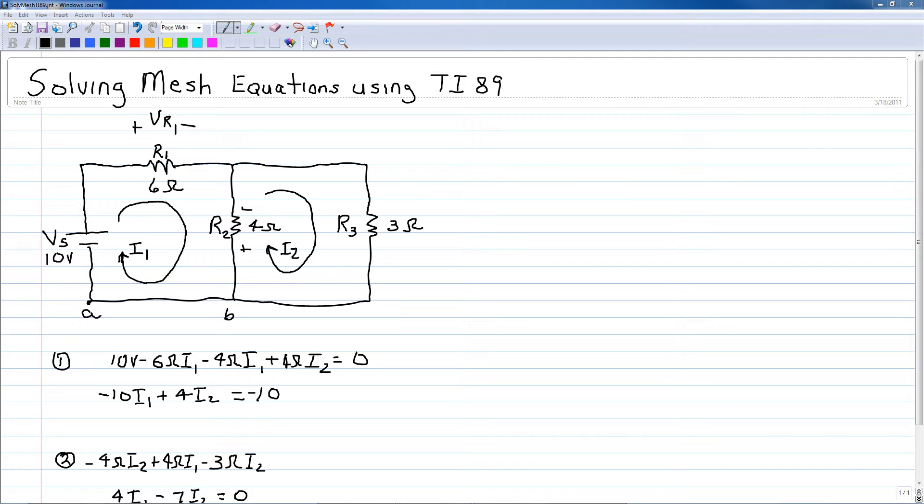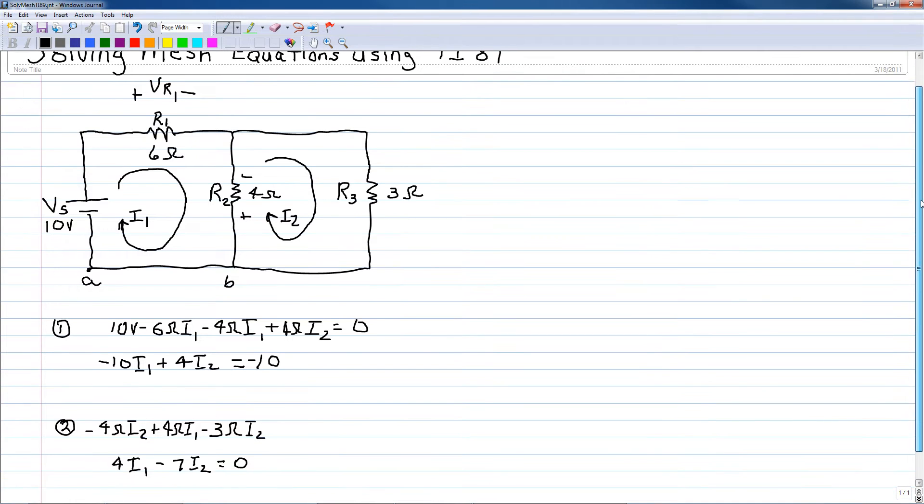Welcome to this video on solving mesh equations using the TI-89. In this example we have a two mesh circuit and we have solved for the mesh equations. For the first mesh we have -10i1 + 4i2 = -10, and for the second equation we have 4i1 - 7i2 = 0.